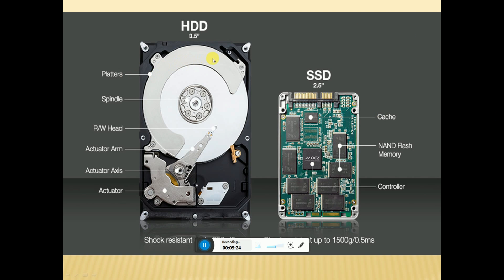Inside the hard disk you can see the aluminum platters, the spindle motor, and the read and write head, which is called the actuator arm. Now explaining the SSD 2.5-inch: this one has cache memory, and both components are NAND flash memory. This one is the controller.